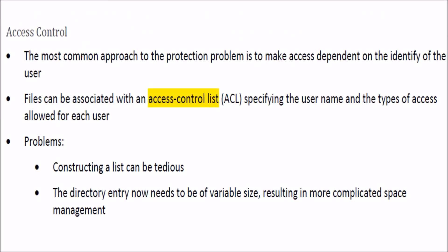So what is access control? This is actually for protection. The most common approach to the protection problem is to make access dependent on the identity of the user. Files can be associated with an ACL — that is, an access control list — which specifies the username and what type of access is allowed for that user.